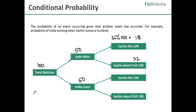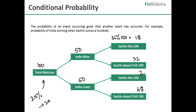We have also been given that Sachin scores hundreds in 20% of India's total matches, which means he must have scored hundreds in 20 matches. Now, he has scored hundreds in 20 matches and 18 of those have come when India wins, so 2 must have come when India did not win. Hence, 48 times when India loses he doesn't hit a century. So we have created a tree which can now practically solve any of the questions that come to us.